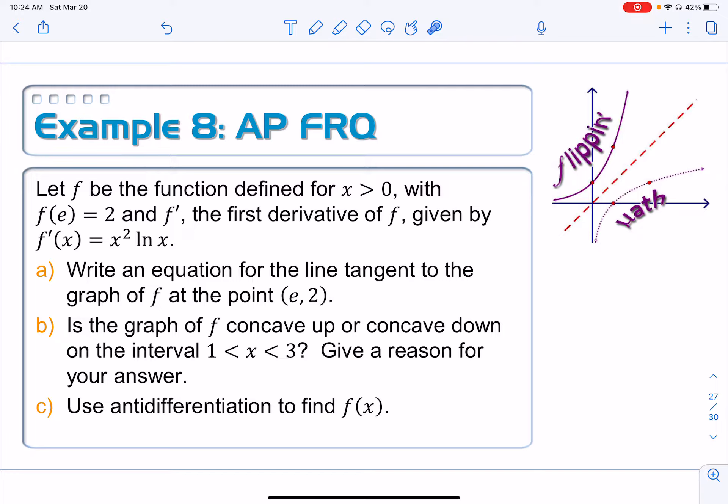Let's take a look. Let f be the function defined for x greater than 0 with f of e equaling 2, f prime, the first derivative of f given by f prime of x is equal to x squared times the natural log of x. Part A, write an equation for the line tangent to the graph of f at the point e, 2.